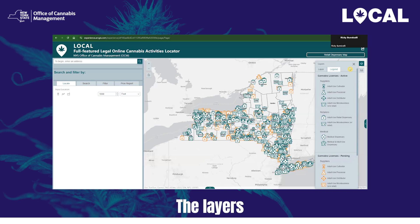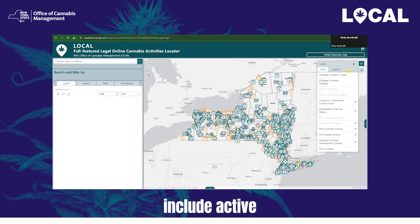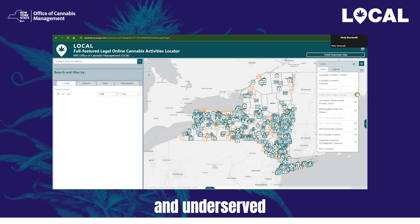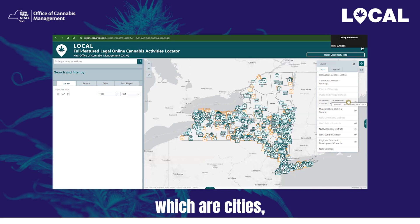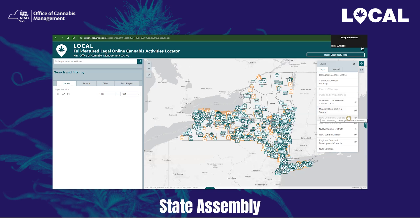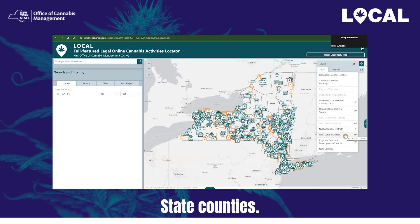Now let's move to layers. The layers in Local represent points of interest or geographies. Point of interest layers include active licensees, pending licensees, inactive licensees, places of worship, and public and private schools. Geographic layers include unserved and underserved census tracts, which pertain to registered organizations, and municipalities — cities, towns, and villages — along with their corresponding population and opt-out status. Other geographic layers include New York City community districts, police precincts, New York State Assembly and Senate districts, regional economic development councils, and New York State counties.